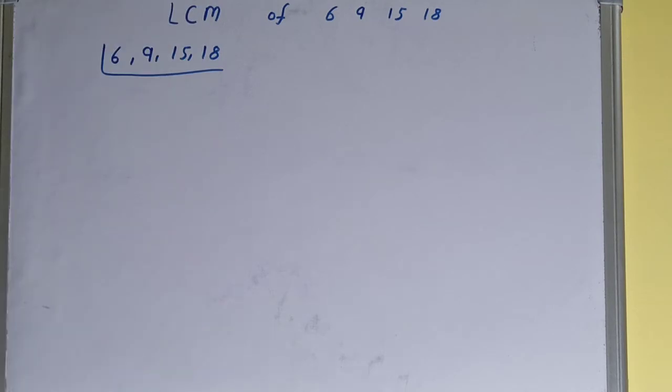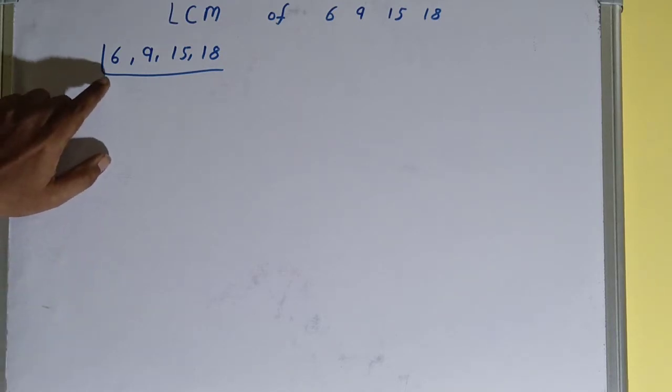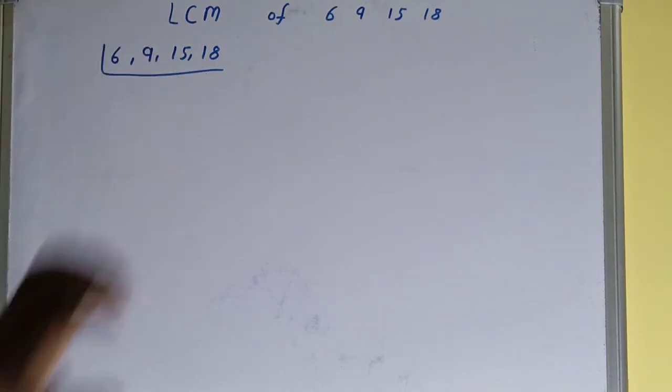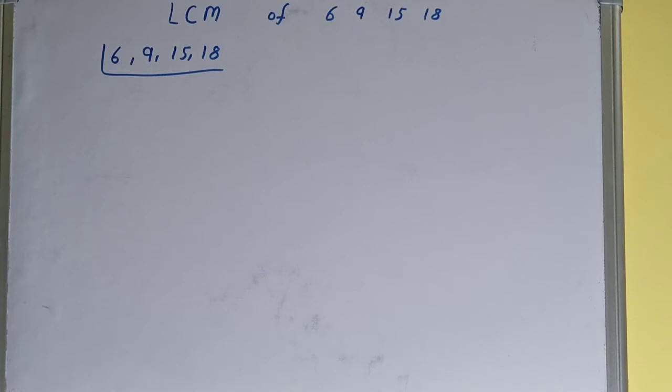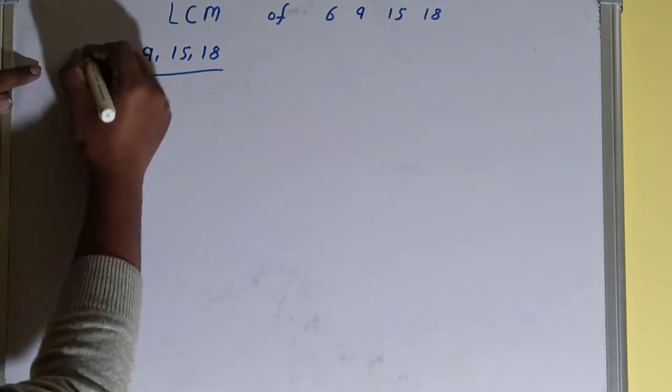The next thing you need to do is start with the lowest prime number, that is 2, and check if any of the numbers is divisible or not. If we check, the first number and the last number are divisible. So even if one of the numbers is divisible, we'll divide. We'll write 2 over here.